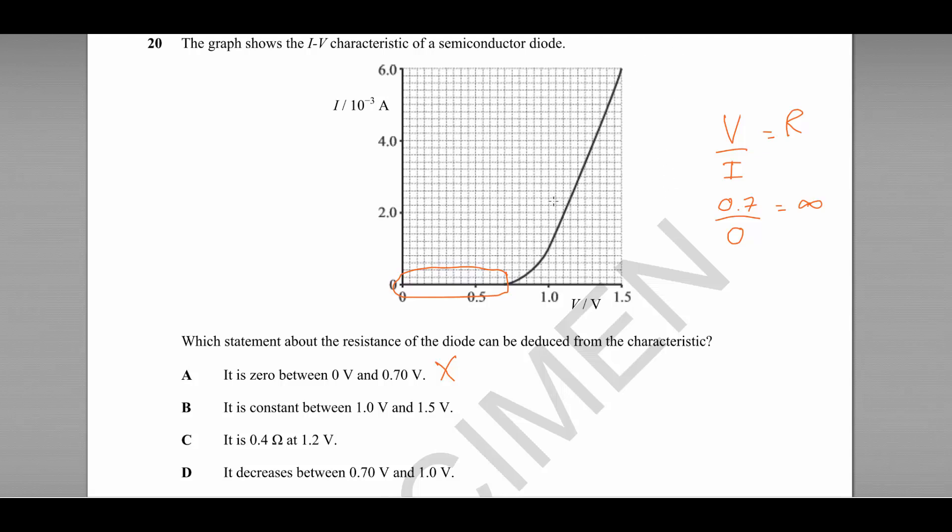If we were to draw a line with a ruler you would see that the line is not quite straight. It is curving, only slightly, but it isn't straight. Therefore B is not correct.